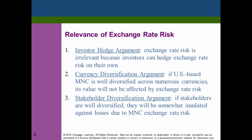However, the currency diversification argument may not be very valid. Even a firm like Microsoft or Apple might be primarily exposed to only three or four currencies such as the Euro, the Peso, and the Chinese Yuan — meaning they are not truly well diversified. The last argument is stakeholder diversification: if stakeholders such as employees, top management, customers, and suppliers are well diversified, they will be somewhat insulated against losses due to MNC exchange rate risk.